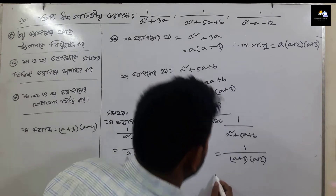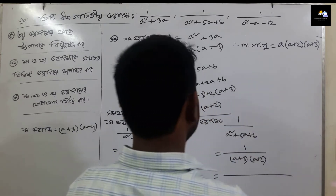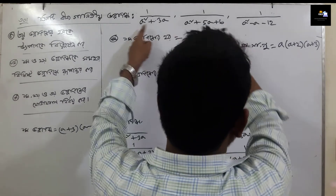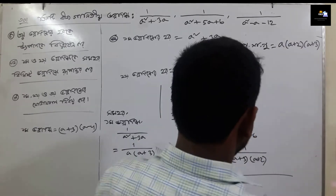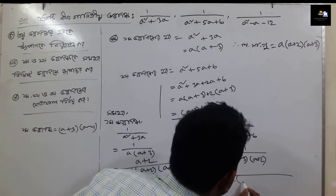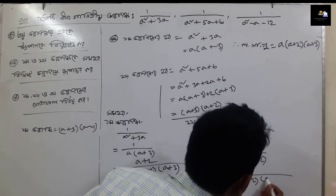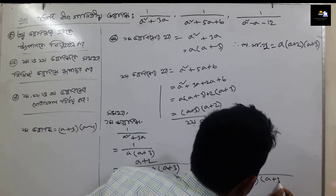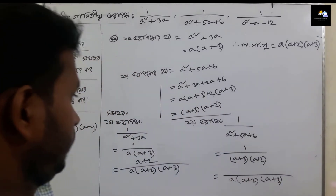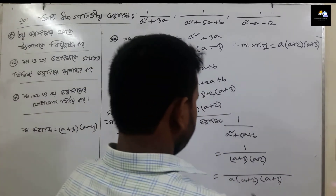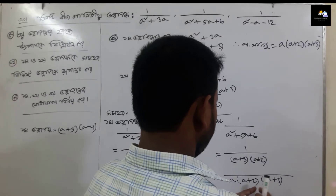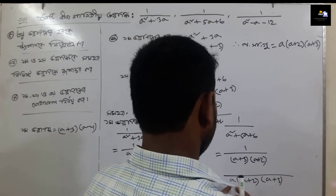Now we have a plus 3. So as we found a plus 3, I will add a plus 2. So we have a plus 3 matrix.